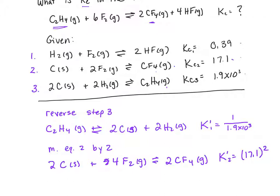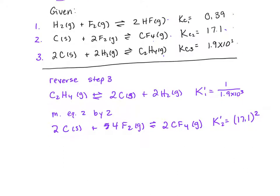The other thing showing up in the product side of our overall expression is 4 HF. In Equation 1, we have 2 HF in the product side. So we're going to multiply Equation 1 by 2 as well. So we're going to end up with 2 H2 gas phase plus 2 F2 in the gas phase in equilibrium with 4 HF in the gas phase.